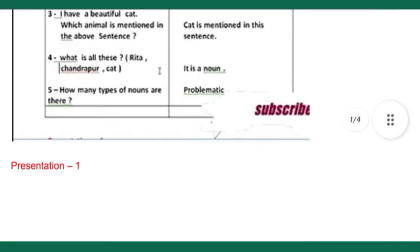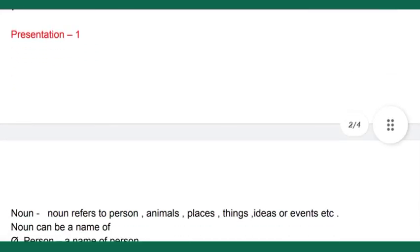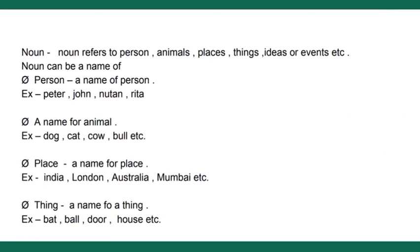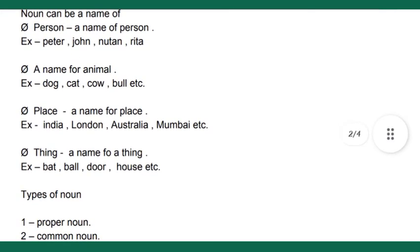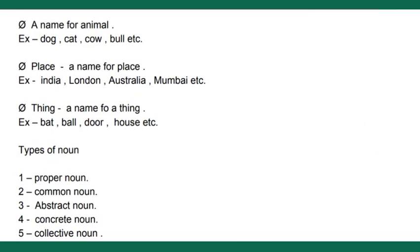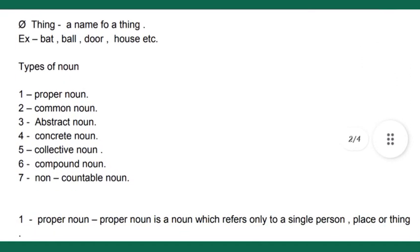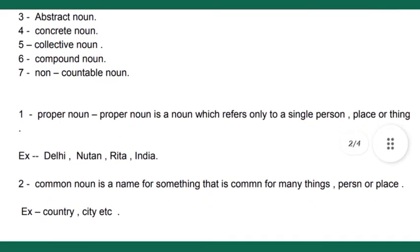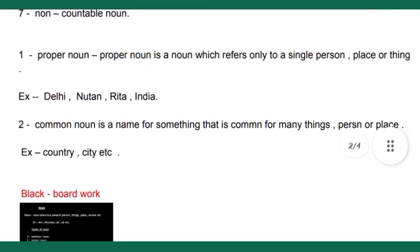Now for Presentation 1, we have to explain nouns to the students. Here you can see the definition of a noun — we also give examples and make sentences using nouns. A noun is a name for a person, animal, place, or thing. The types of nouns include proper noun, common noun, abstract noun, concrete noun, collective noun, compound noun, and non-countable noun. In Presentation 1, we explain proper noun and common noun.